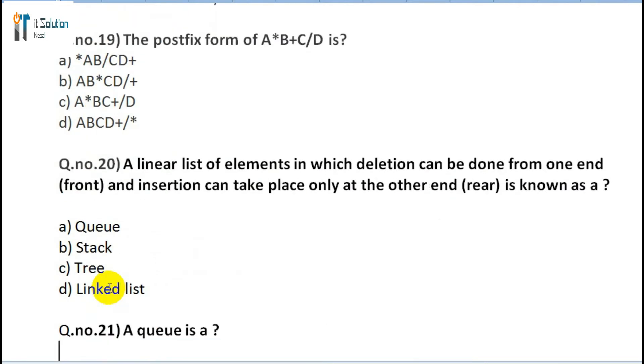Question 20: A linear list of elements in which deletion can be done from one end, front, and insertion can take place only at the other end, rear, is known as: A) Queue, B) Stack, C) Tree, D) Linked list.